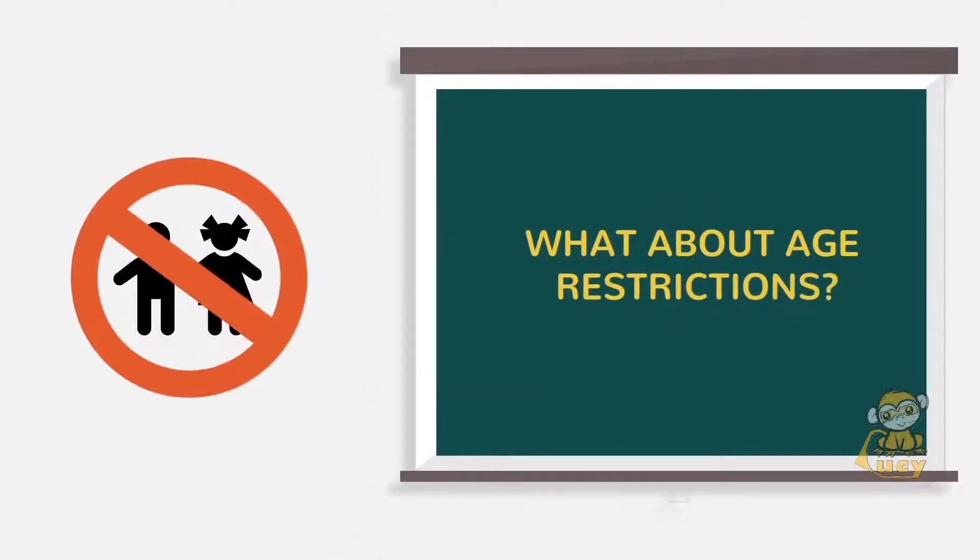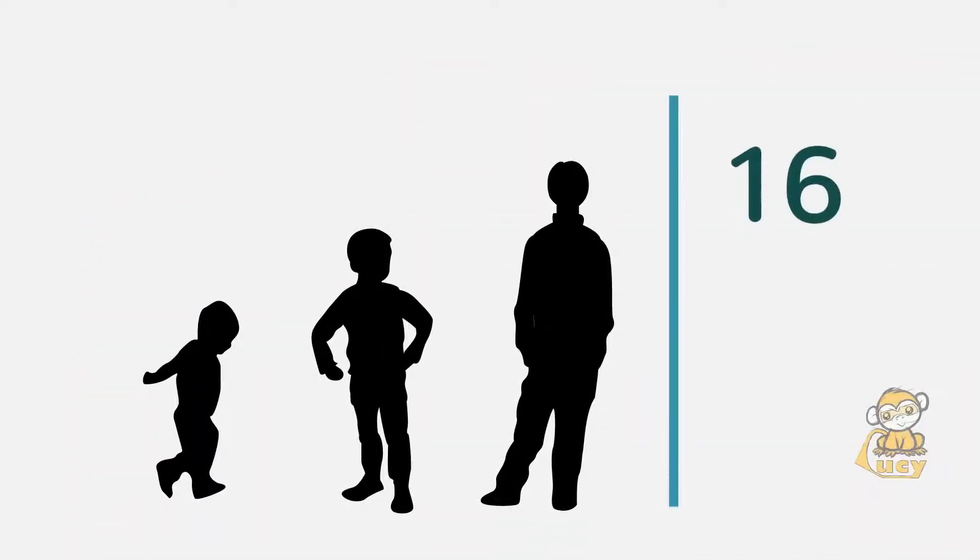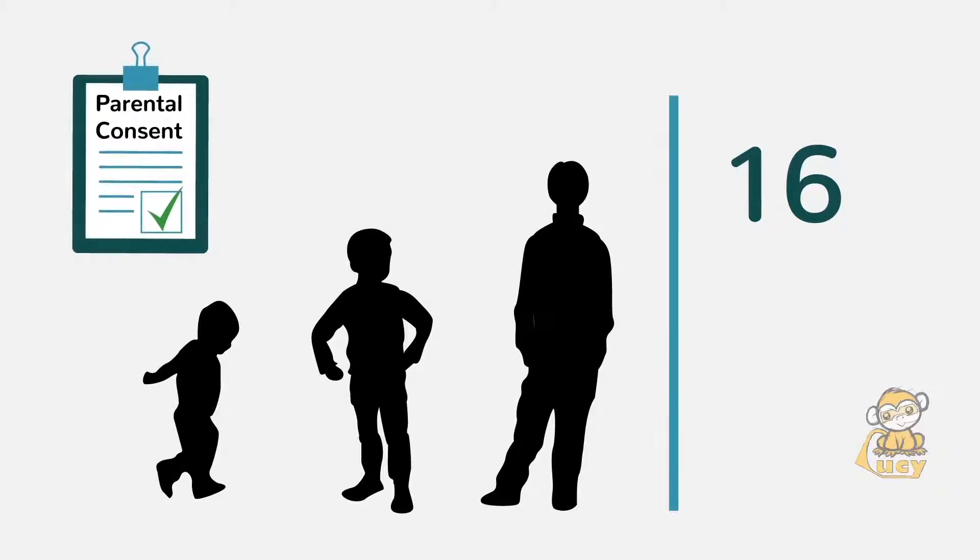What about age restrictions? To process the personal data of any subject who is 16 years of age or younger, you will need to obtain consent from their parent or legal guardian. You should be aware that the GDPR allows EU member states to lower this down to age 13, so keep this in mind.